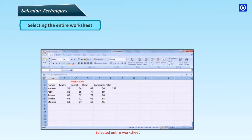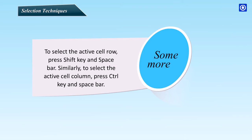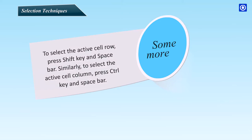To select the entire worksheet, click on the intersection between the column and row referencing numbers. To select the active cell's row, press Shift key and Space bar. Similarly, to select the active cell's column, press Ctrl key and Space bar.